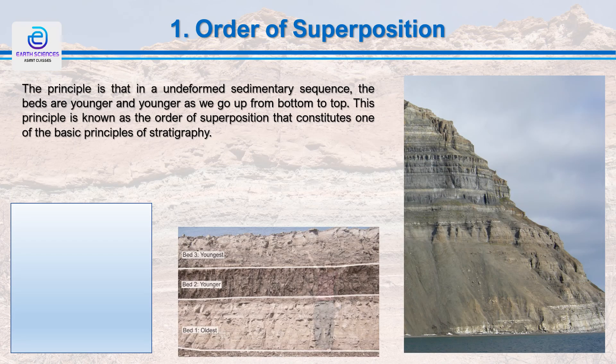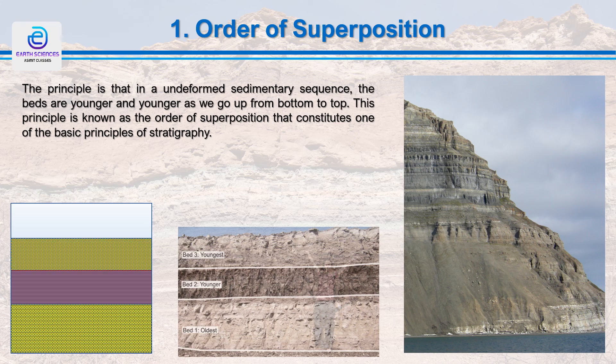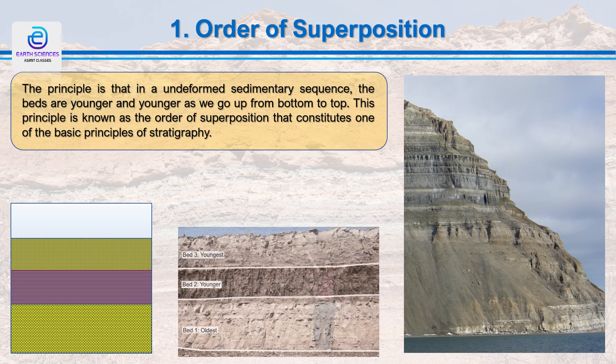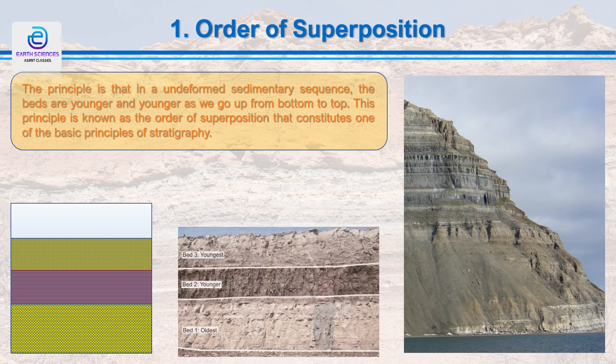When sediments are deposited in a basin, they go down to the bottom layer by layer, and the bottommost layer is thus the first to be deposited. In a sedimentary sequence, the beds or layers at the bottom are deposited first and hence are the oldest; the beds overlying them are younger. In an undeformed sedimentary sequence, the beds are younger and younger as we go from bottom to top. This principle is known as the order of superposition, and it constitutes the basics of stratigraphic principles.